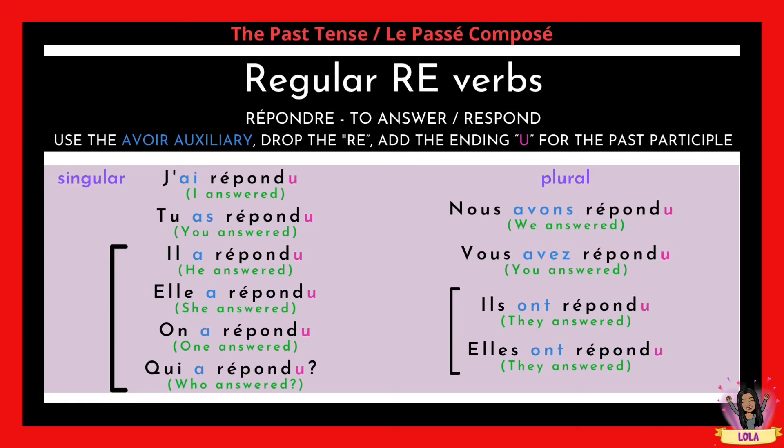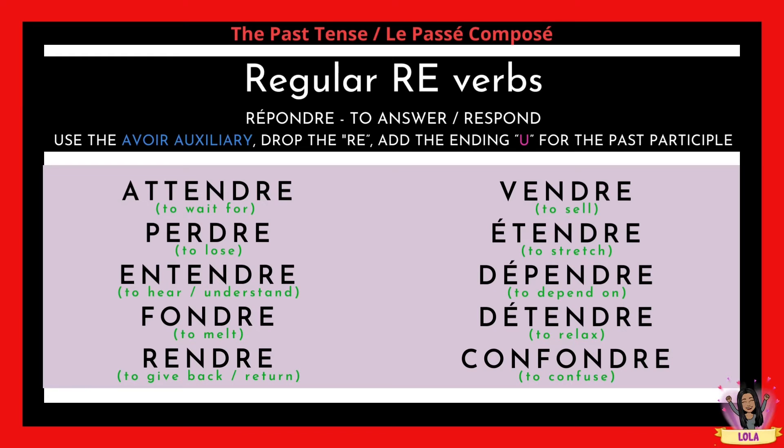Now let's look at other regular RE verbs. You do the same thing — drop the RE and add U. We have: attendre (to wait for), perdre (to lose), entendre (to hear or understand), fondre (to melt), rendre (to give back or return), vendre (to sell), étendre (to stretch), and dépendre (to depend on).